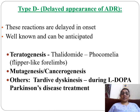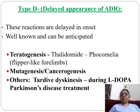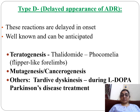Type D refers to delayed appearance of adverse drug reactions. These reactions are delayed in onset, well known, and can be anticipated. Teratogenicity: the thalidomide disaster is a classic example — pregnant ladies took thalidomide for morning sickness and phocomelia occurred in their children. Mutagenicity and carcinogenicity can also occur as delayed reactions.